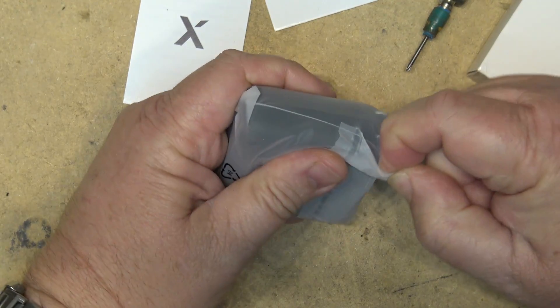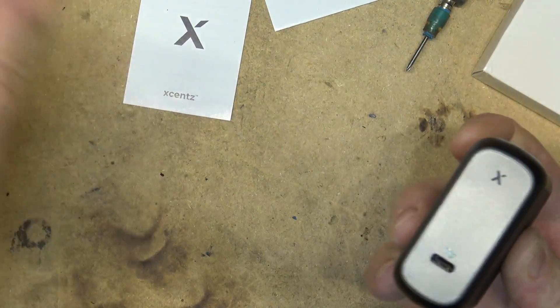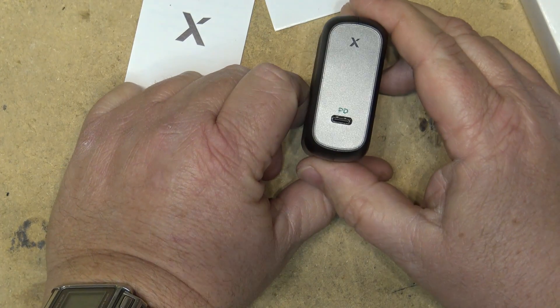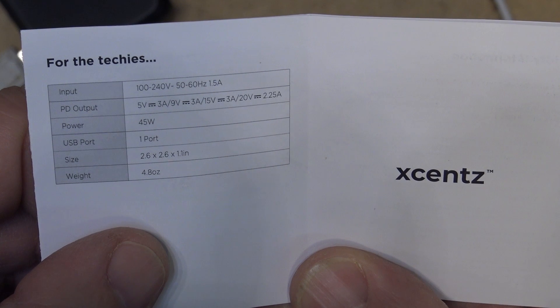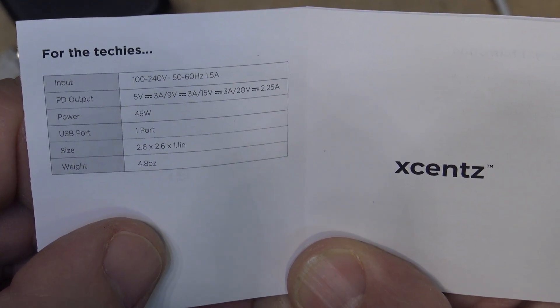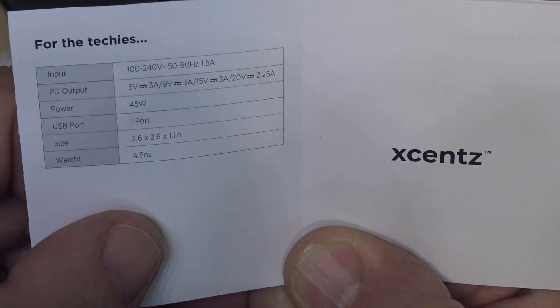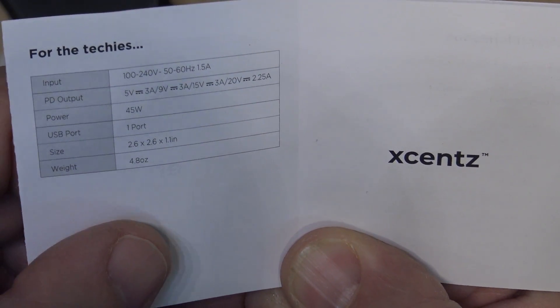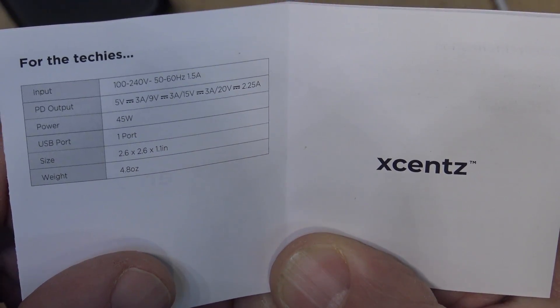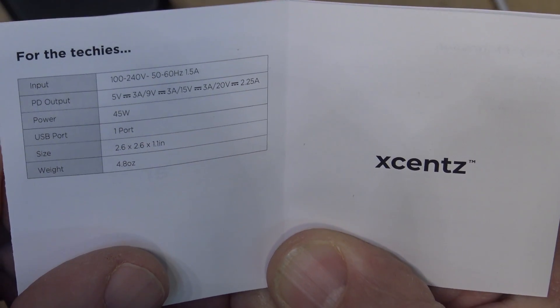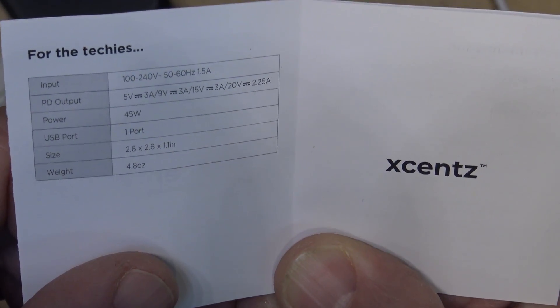Here is the unit - it's factory fresh, all sealed up. This one is a USB-C charger. Specification-wise, it'll take an input voltage of 100 to 240 volts at 50 or 60 hertz, drawing 1.5 amps. The output can provide 5 volts at 3 amps, 9 volts at 3 amps, 15 volts at 3 amps, and 20 volts at 2.25 amps, for a maximum power output of 45 watts.